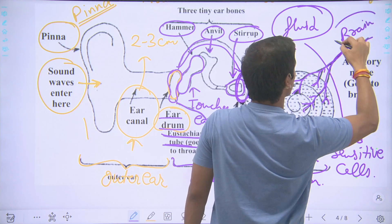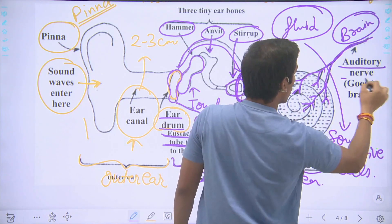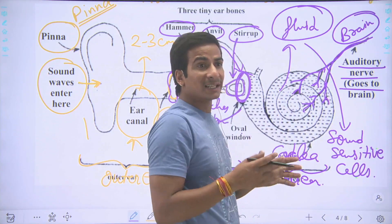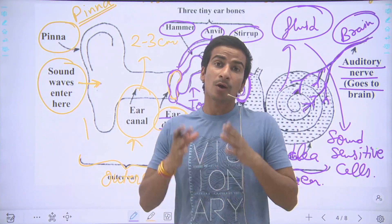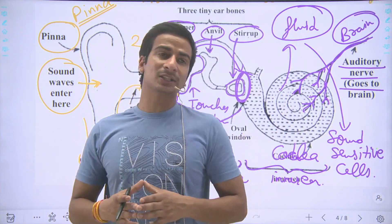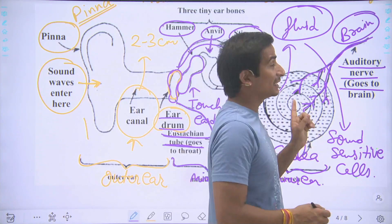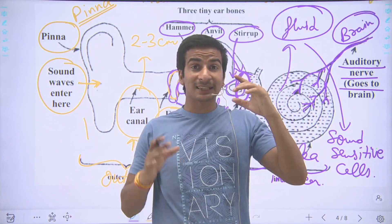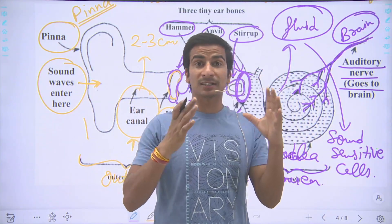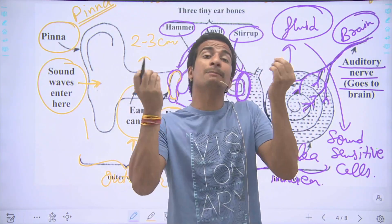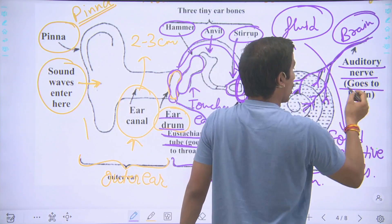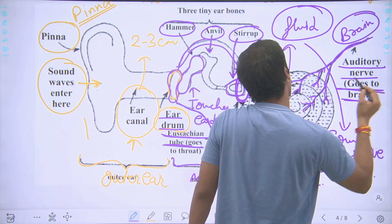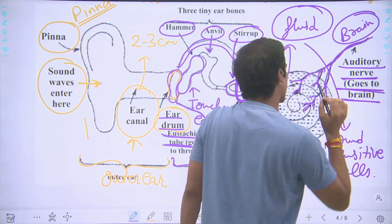The auditory nerves take the electromagnetic signals produced by the cochlea cells to the brain. The brain processes these signals and produces the sensation of hearing. So the auditory nerves carry the electromagnetic signals produced by sound vibrations to reach the brain.